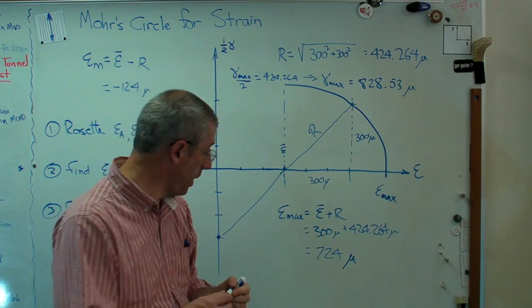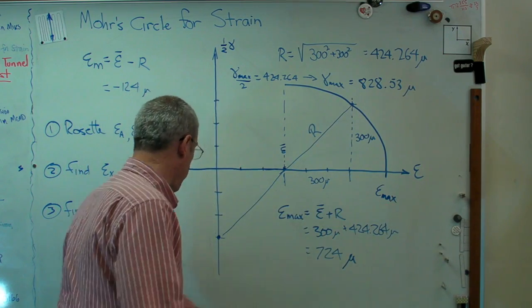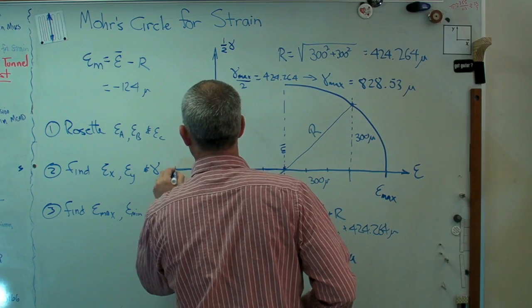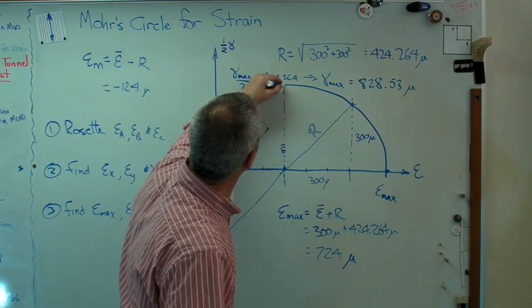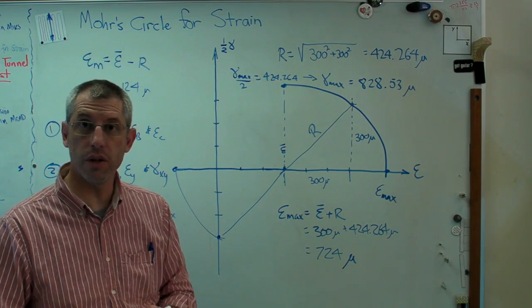Now I know my principal strains. I know epsilon max, epsilon min, which I can sketch in here. It's going to go back over this way. There's epsilon min, there's epsilon max, and there's gamma max, right there. Those are the principal strains done using Mohr's circle.